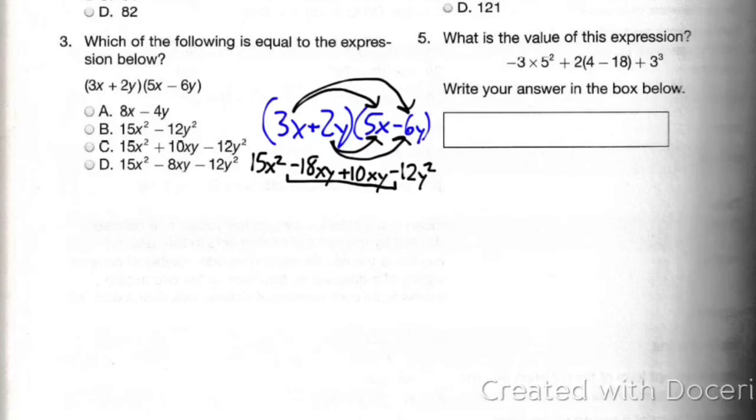Now my last step here, after I've double distributed, is to combine my like terms. My like terms are in the middle. They're like terms because they both have an xy. No fancy numbers with them or anything like that. Those are the only ones that are in common. And negative 18 minus 10 is negative 8, so it's negative 8xy. Your variables stay the same. And I have 15x squared right there and a negative 12y squared right there. This is my final answer.